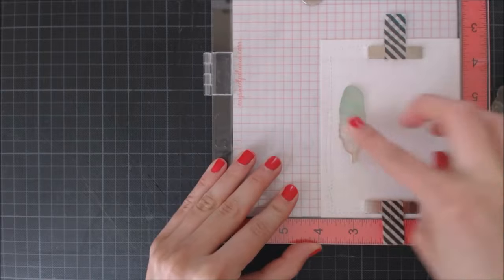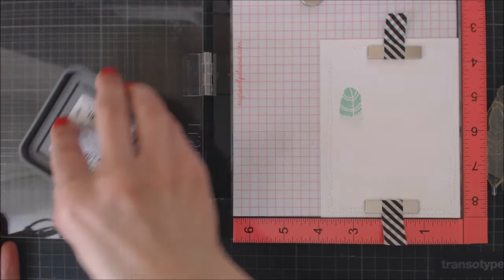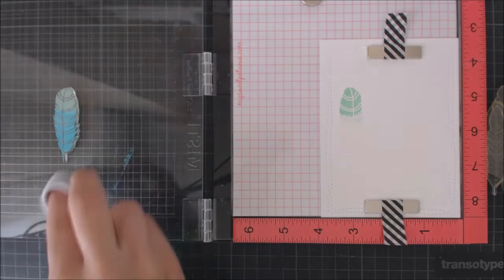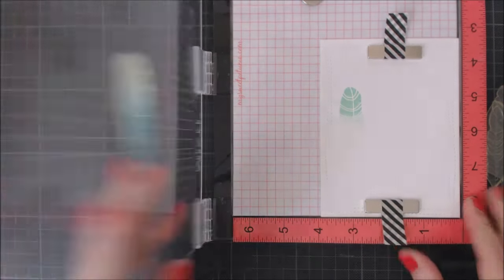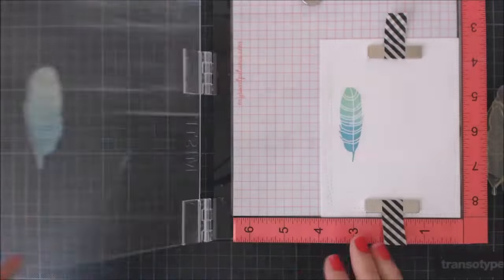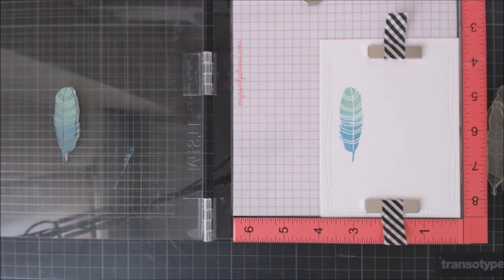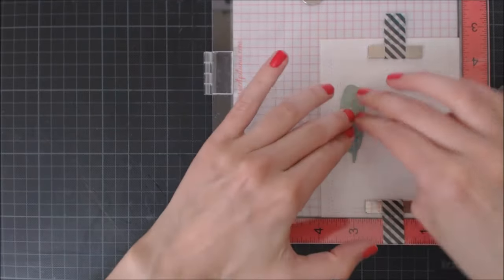Then I take my Broken China ink and I'm going to ink the bottom of my stamp only and smooth it out in the middle again so there's a nice transition between both colors. Then I keep doing this until I'm happy with the transition from one color to another.